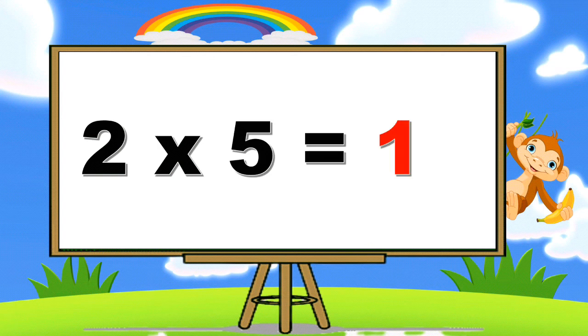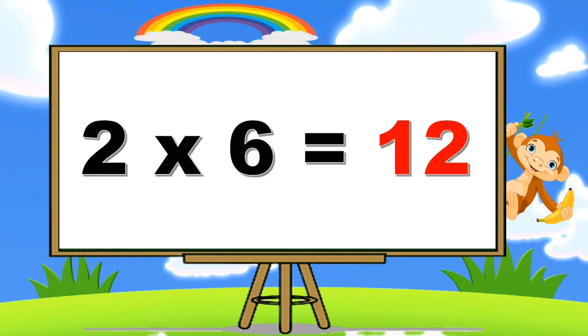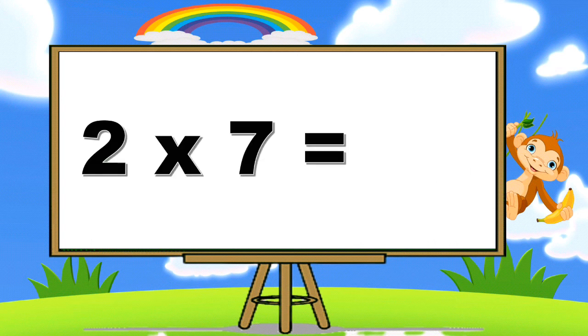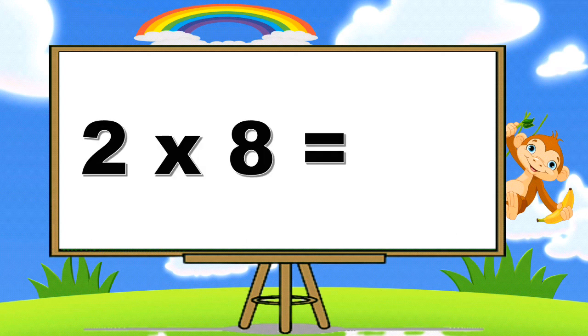Two fives are ten. Two sixes are twelve. Two sevens are fourteen. Two eights are sixteen.